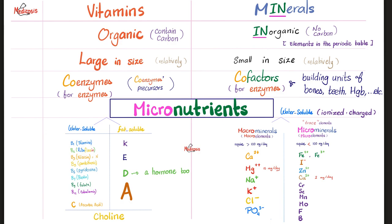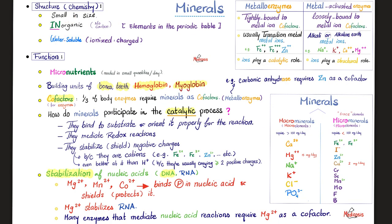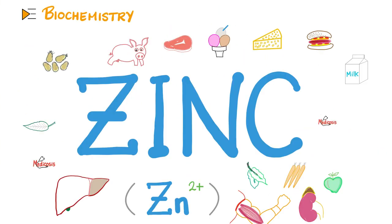Here is a lovely comparison between vitamins and minerals — pause and review. Some minerals are in your bones, like calcium and phosphate. Minerals are small in size, inorganic, and water-soluble. You need them in your diet. They can be building units for bones, teeth, hemoglobin, and myoglobin. About one-third of the enzymes in your body require one mineral or another as a cofactor — we call these metalloenzymes, like the famous metalloproteinases: enzymes that digest proteins but need a mineral as a cofactor. Minerals also stabilize your DNA and RNA, especially magnesium. And don't forget cobalt, from which cobalamin, or vitamin B12, is derived.